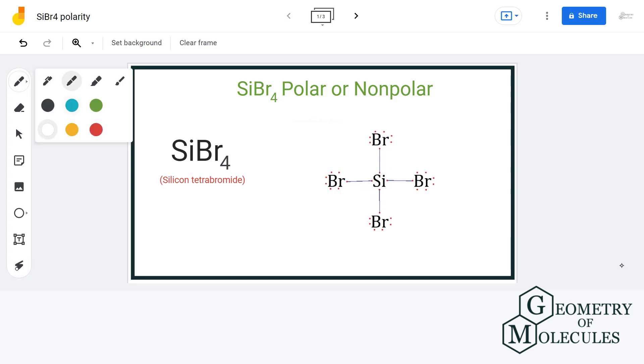The electronegativity of silicon is 1.8 and that of bromine is 2.8. And when we calculate the difference, we get the value of 1 which is high enough to induce polarity in the bonds. And so, there is dipole moment in silicon-bromine bonds.